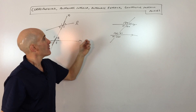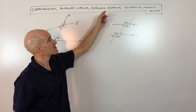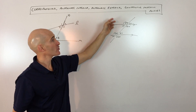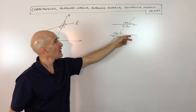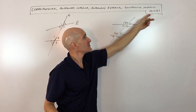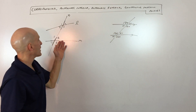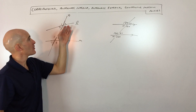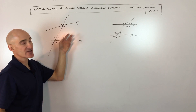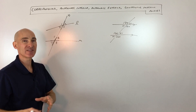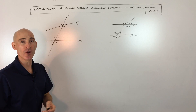So just remember: corresponding, alternate interior, alternate exterior — those angles are going to be congruent when the lines are parallel. And then consecutive interior angles are going to be supplementary — they add up to 180. But if the lines are not parallel, they still have those same names — alternate exterior, alternate interior, and so forth — it's just that the angles are not necessarily congruent or equal.